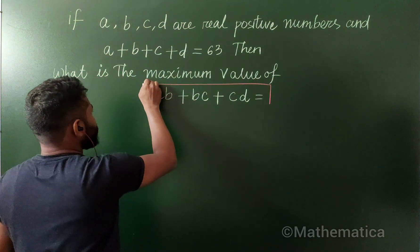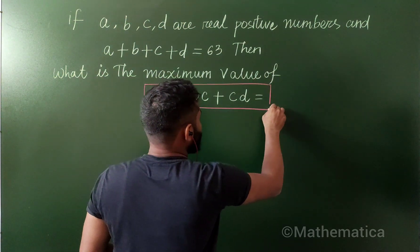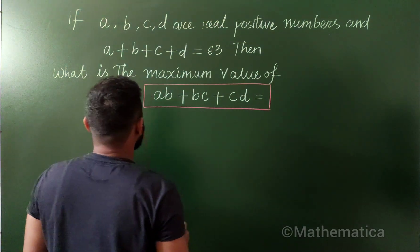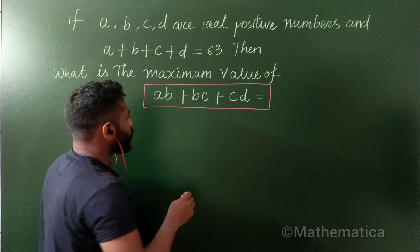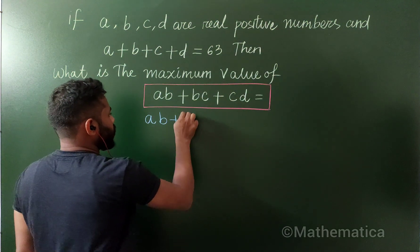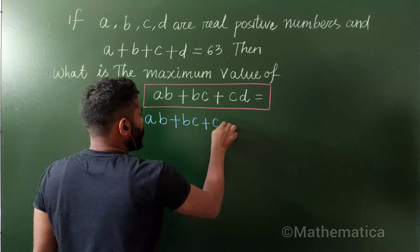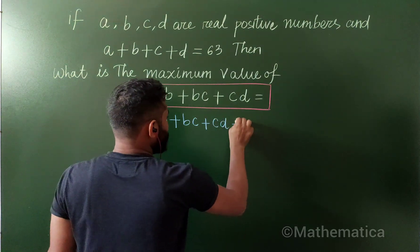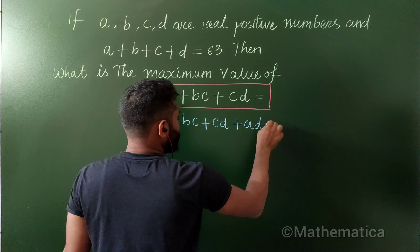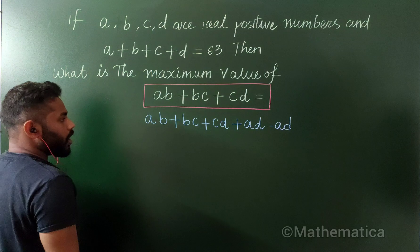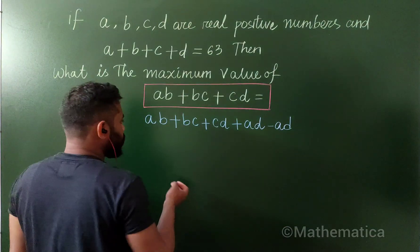I am going to simplify this one. I am going to factorize this one so that I can analyze. So what I am going to do here, I am going to add ab bc cd plus ad, and I have to subtract in order to balance.